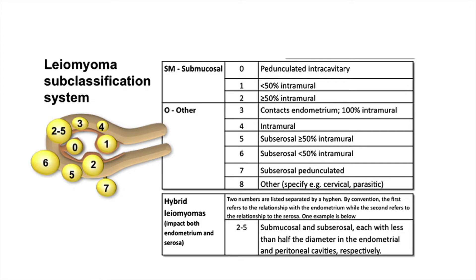There is also a different variety called hybrid leiomyomas, which impact both the endometrium and the serosa. Two numbers are listed separated by a hyphen — by convention the first refers to the relationship with the endometrium and the second refers to the relationship to the serosa. This is an example for hybrid leiomyomas.